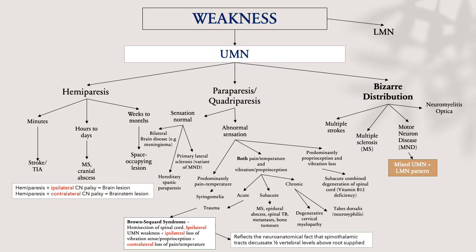Upper motor neuron weakness with a bizarre distribution should get you thinking about multiple strokes, multiple sclerosis — which is a diagnosis made from lesions disseminated in space and time, where on imaging you must find lesions separated in space and disseminated in time — as well as motor neuron disease, which gives a mixed patchy upper and lower motor neuron pattern, and NMO — neuromyelitis optica — which is a mimic of multiple sclerosis.